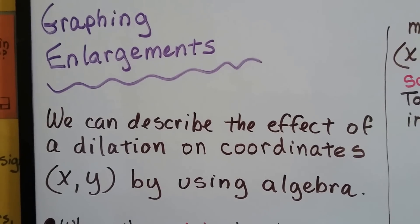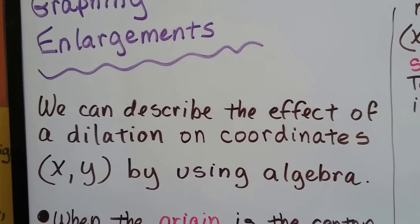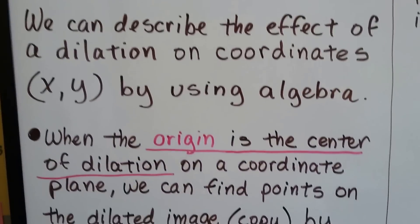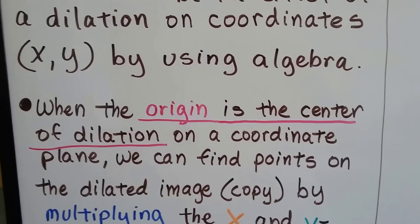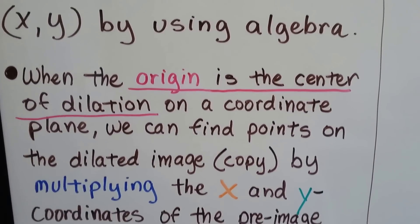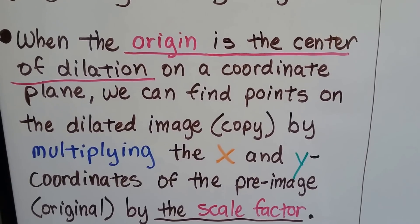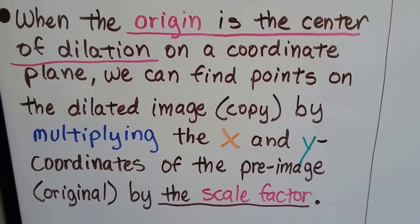We can describe the effects of a dilation on the coordinates x and y by using algebra. When the origin is the center of dilation on a coordinate plane, we can find points on the dilated image, the copy, by multiplying the x and y coordinates of the pre-image, the original, by the scale factor.